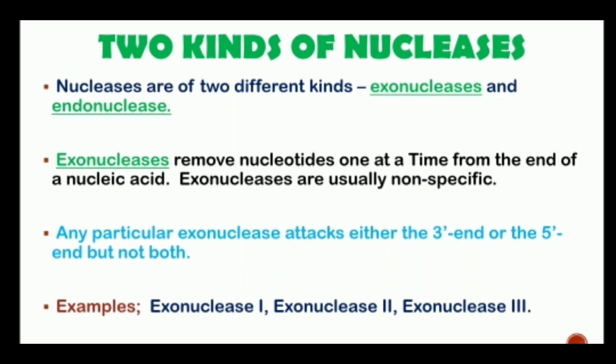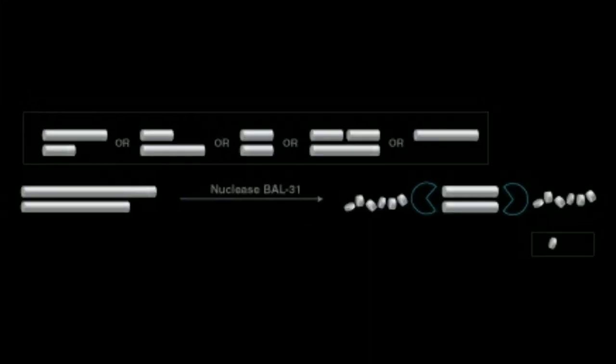Exonucleases remove nucleotides one at a time from the end of nucleic acids. Exonucleases are usually non-specific, and any particular exonuclease attacks either the 3-prime end or the 5-prime end, but not both. Examples include Exonuclease I, Exonuclease II, and Exonuclease III. Exonuclease III is purified from E. coli; it removes nucleotides from one strand of a double-stranded DNA molecule, leaving the other strand intact.